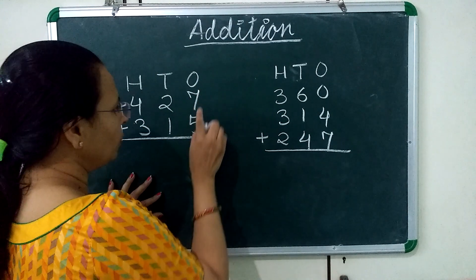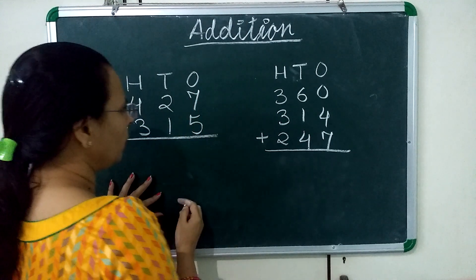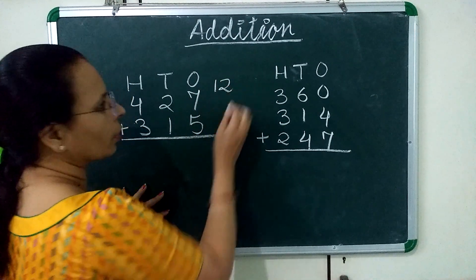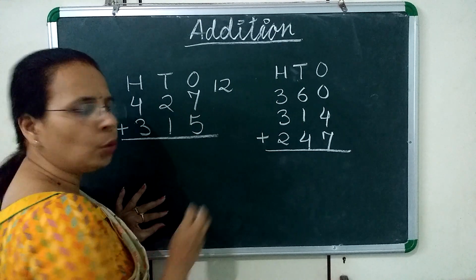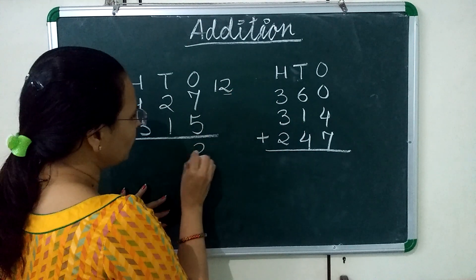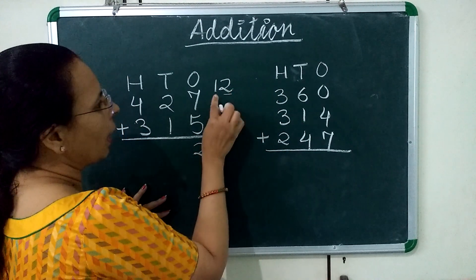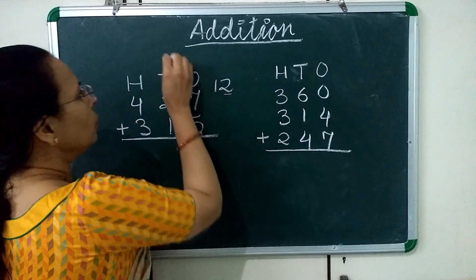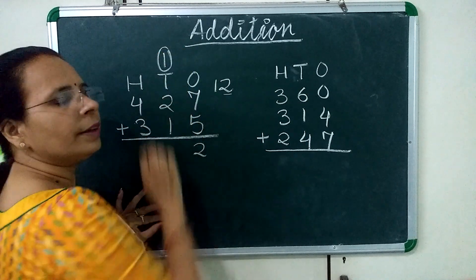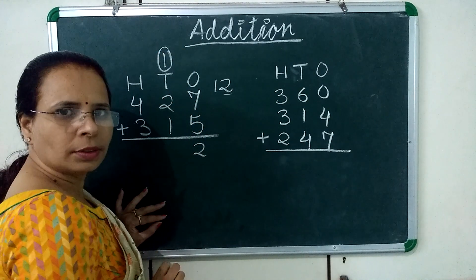7 plus 5 is 12. We will write 2 at the 1's place and carry 1 over to the 10's place.